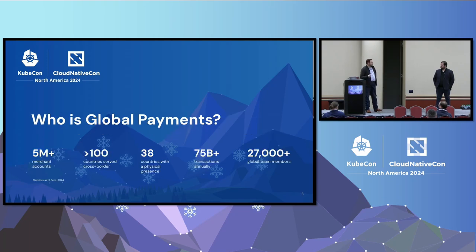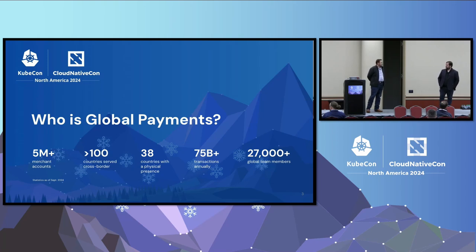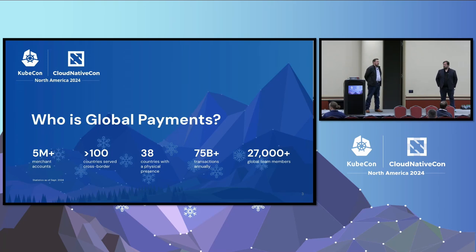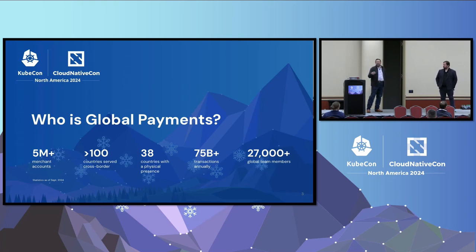So who are we? Global Payments has about 5 million merchant accounts, a physical presence in about 38 countries, and we do about 75 billion transactions annually. About 27,000 employees worldwide. We're based out of Atlanta, but we have offices all over the world. We're a Fortune 500 company. If you've never heard of us, that's okay — but I guarantee you, if you've used your credit card in the past week, we've probably touched your payment information.